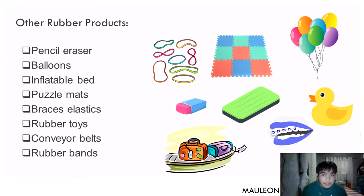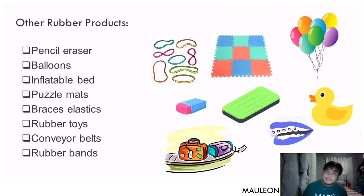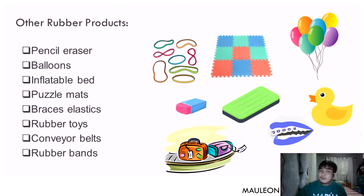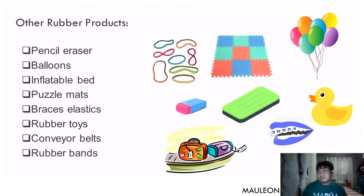We also have other kinds of rubber products such as pencil erasers, balloons, inflatable beds, puzzle mats, bracelets, rubber toys, conveyor belts, and rubber bands, which commonly use synthetic rubbers in their composition.